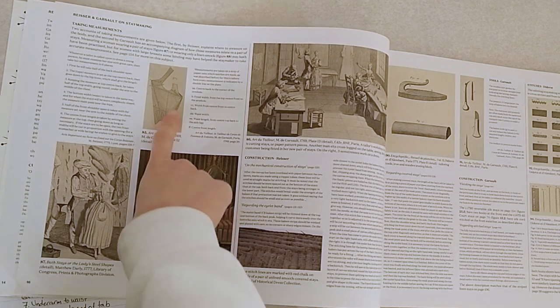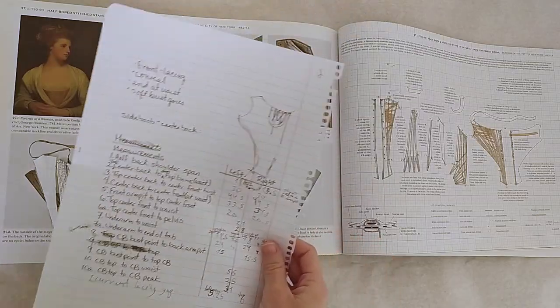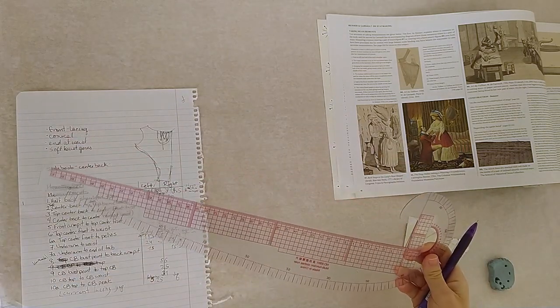In the beginning of the book there's a very useful chapter about how people were measured for stays in the 18th century. So I took my measurements using that explanation, and now I will draft out a pattern using the arc method from the end of the book. And then I will use the 1780s pattern that I copied from Patterns of Fashion and try to make that pattern match my measurements. So let's see how this goes. And now I draft my stays.